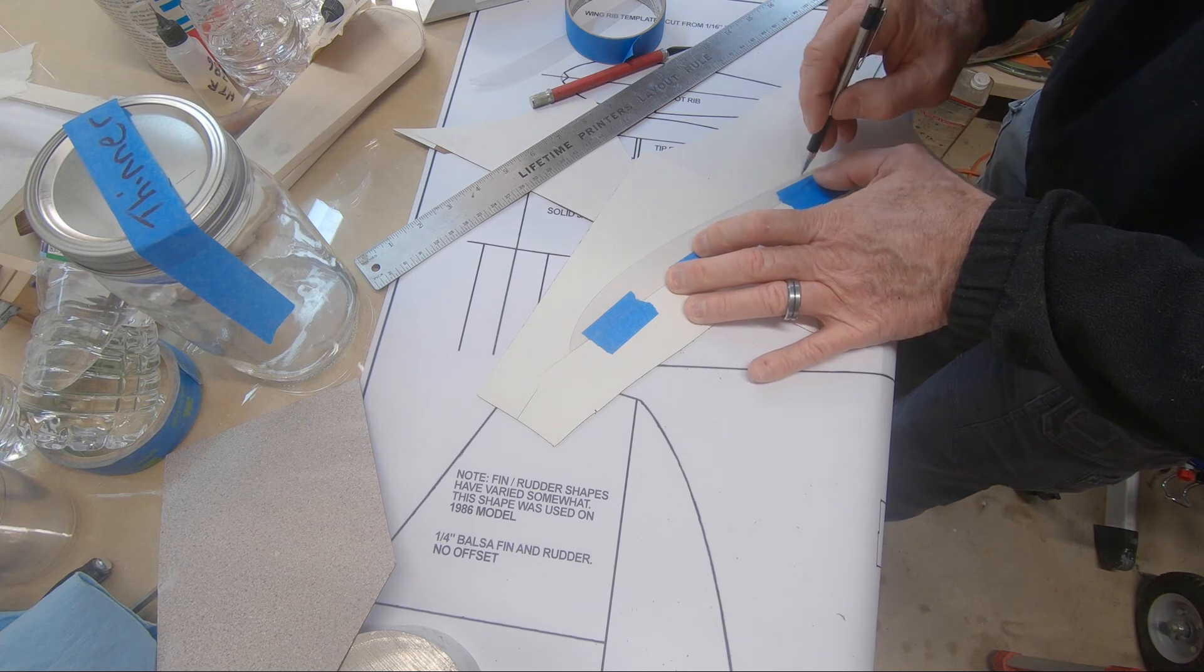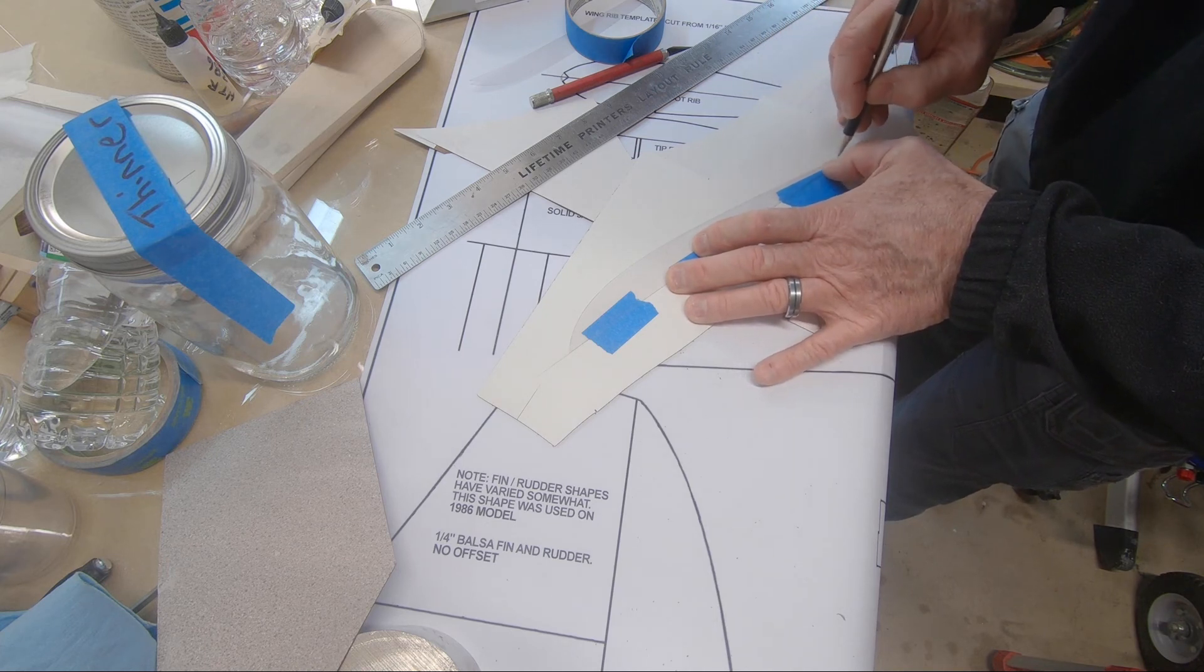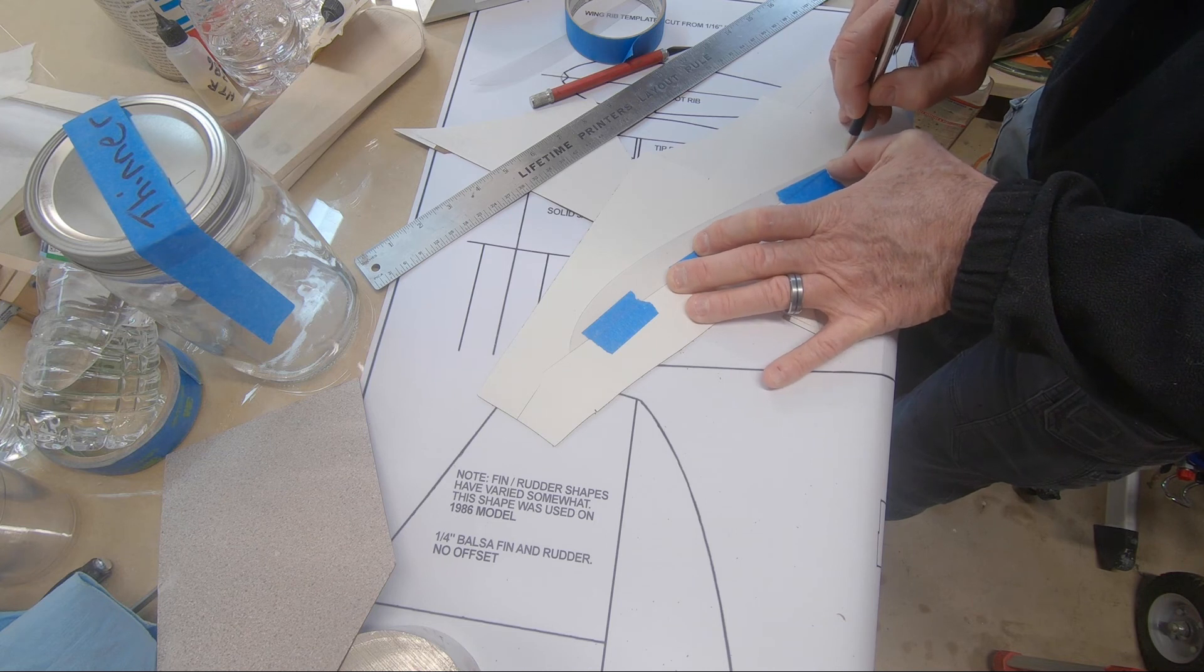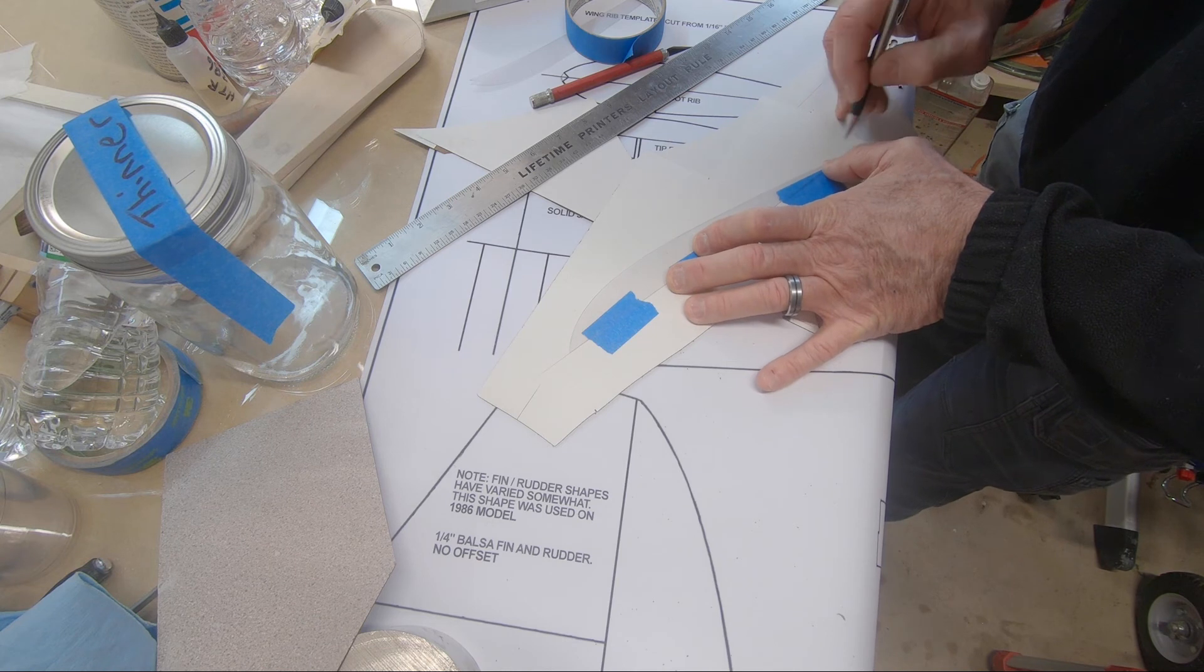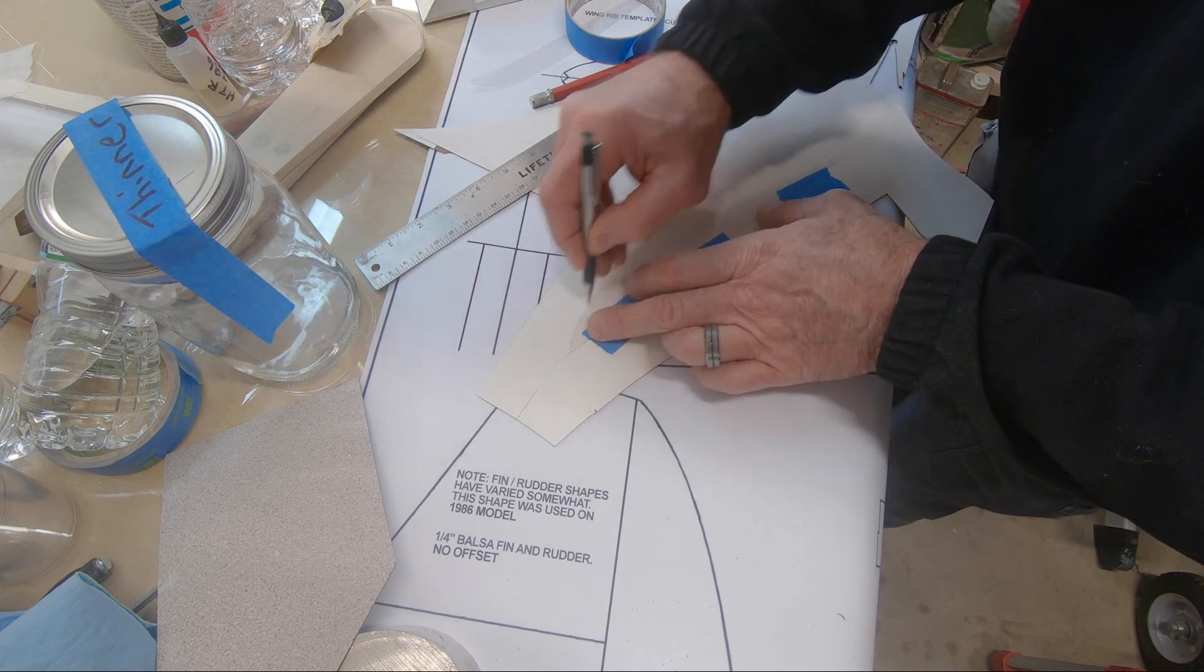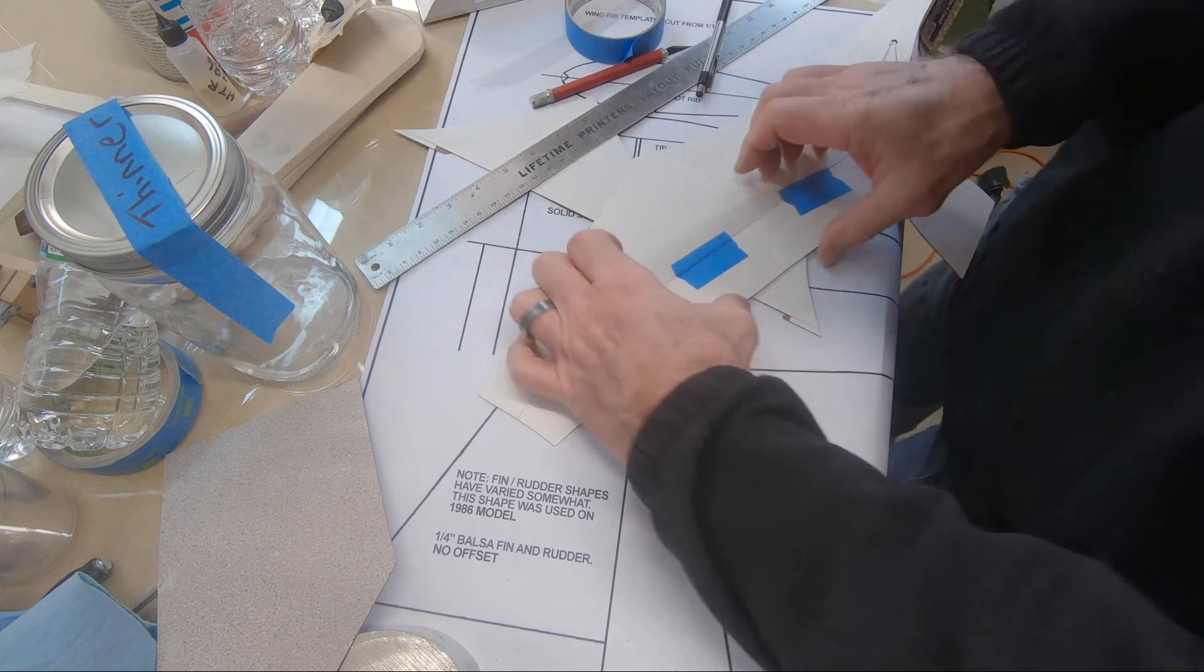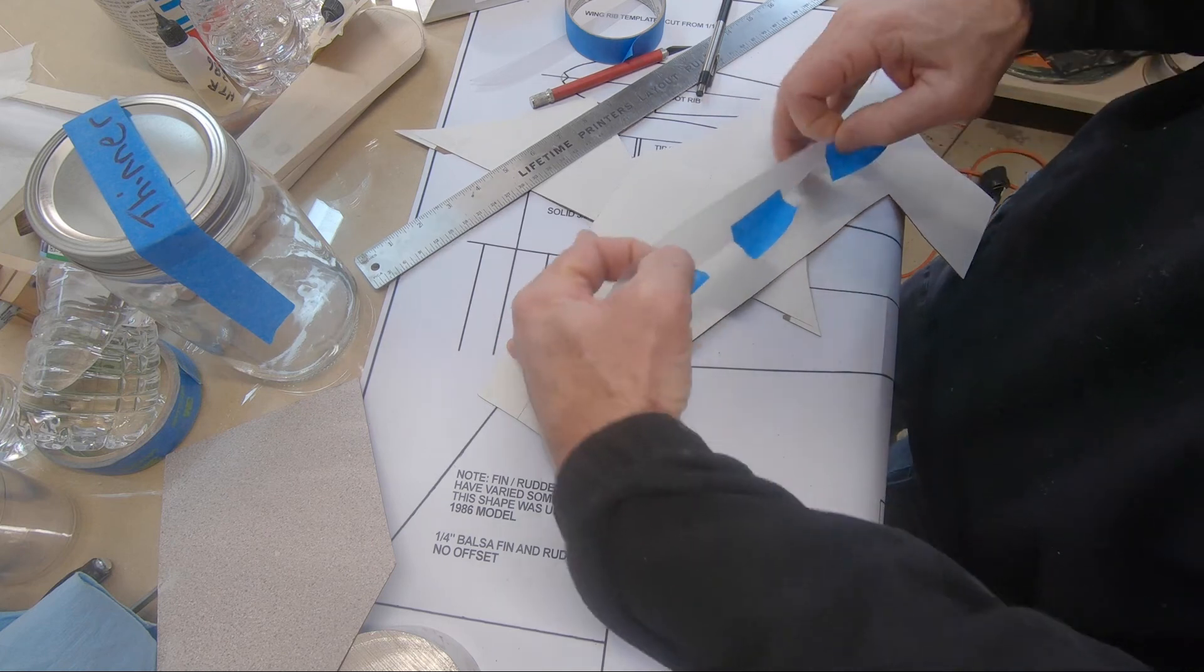And at this point, I'm going to trace around it with the sharpest ballpoint pen you can get. I use these Zebra fine point. Make sure you don't push in hard enough to distort this template, especially back here where it gets thin. So, now you've got a super fine line and that's going to be your cut line.